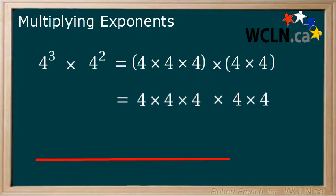Let's count up the fours and convert this to a single number with an exponent. 1, 2, 3, 4 and 5. So we get 4 to the power of 5.